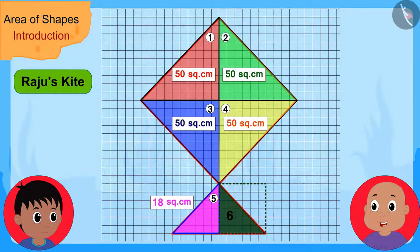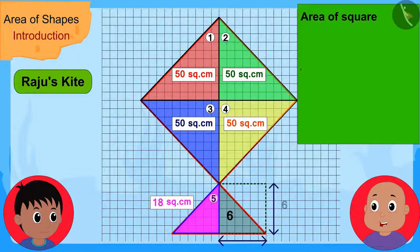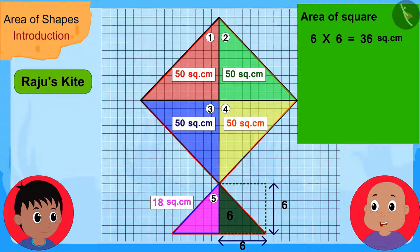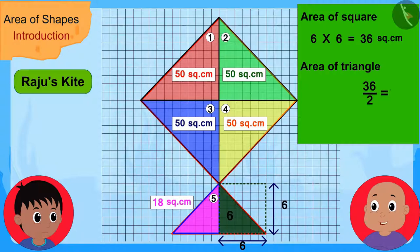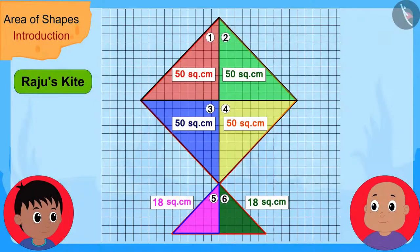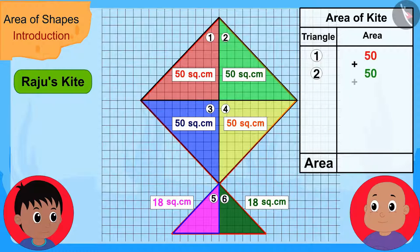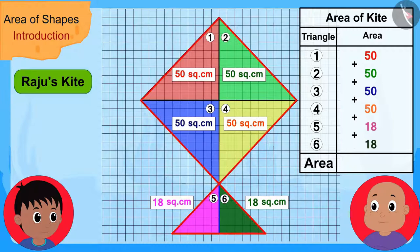'Now, this second small triangle, just like the first small triangle, is half of this 36 square centimeter square. This means that the area of this second small triangle is also 18 square centimeters. Now, finally, we just have to add the area of all these triangles and we will know the area of your kite. In this way, the area of your kite is 236 square centimeters.' Bablu explained to Raju.